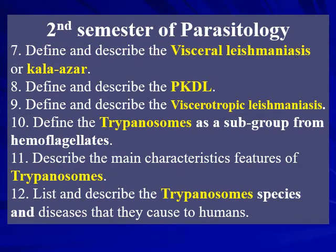You will also define and describe the visceral leishmaniasis or kala-azar, define and describe the post-kala-azar dermal leishmaniasis, describe the viscerotropic leishmaniasis, define the trypanosomes as a subgroup from haemoflagellate, describe their main characteristic features, and list and describe the trypanosome species and the diseases they cause to humans.